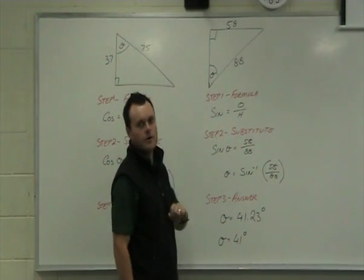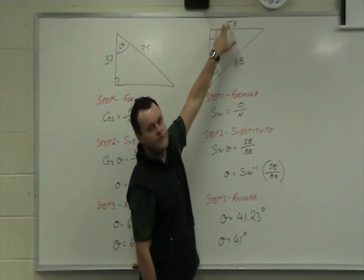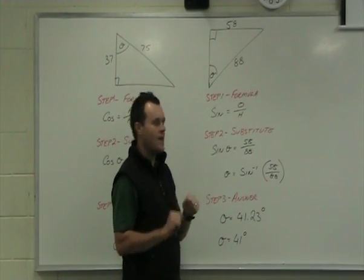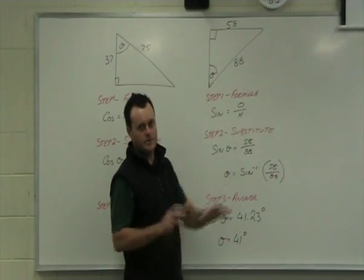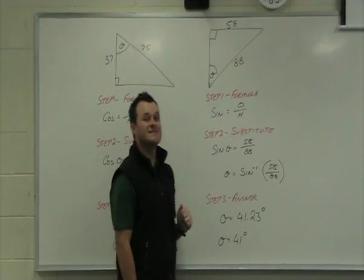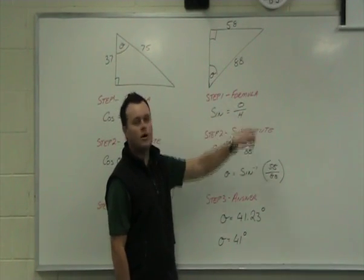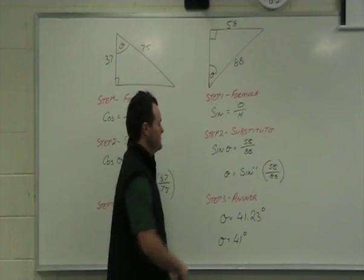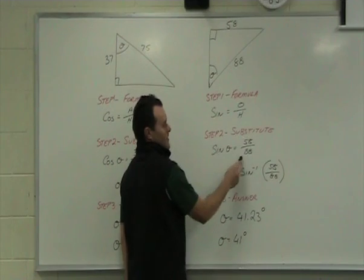The next one again, right angle triangle. Angle down the bottom this time. We've got 58 at the top and 88 here. Looking at the angle opposite hypotenuse. Opposite hypotenuse means that we're doing a sine sum. So, step one, write the formula down. Sine is equal to opposite over hypotenuse. Step two, substitute in. Sine theta is equal to 58 over 88.